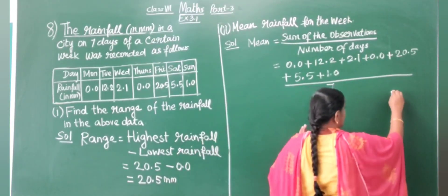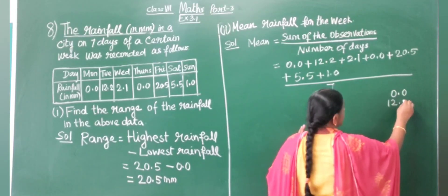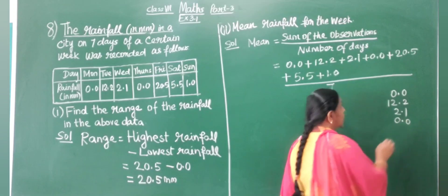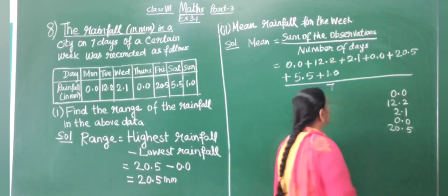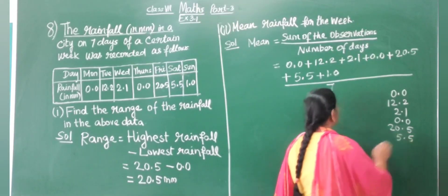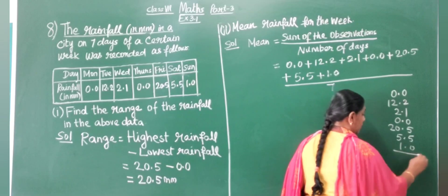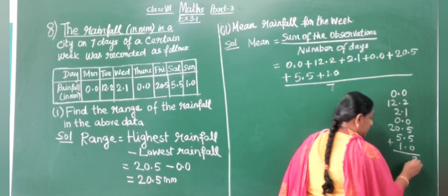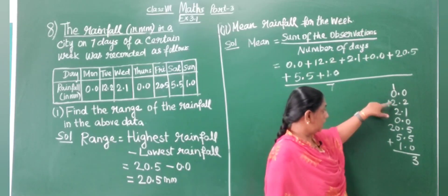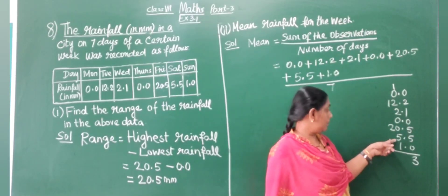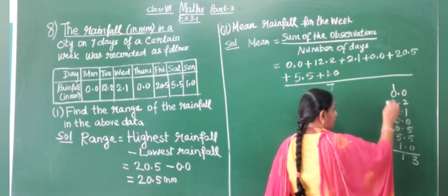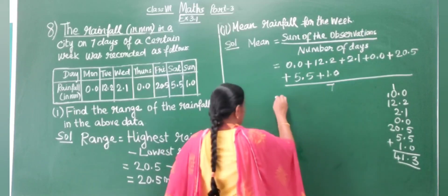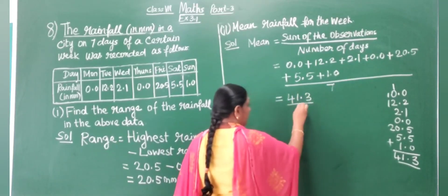Adding the decimal parts: 2 plus 1 is 3, plus 5 is 8, plus 5 is 13 — carry 1. Then 1 plus 2 is 3, plus 5 is 8, plus 1 is 9, plus 2 is 11 — carry 1. Total is 41.3, divided by 7.